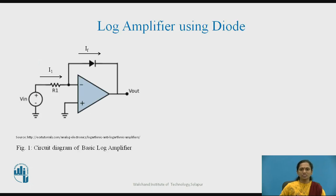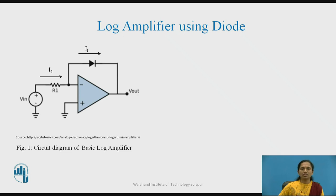Figure 1 shows the circuit diagram for a basic log amplifier, where a p-n junction diode is used in the feedback path, and thus we obtain the output voltage which is directly proportional to the log of the input voltage signal. Resistor R1 is used to minimize the offset voltage loss.